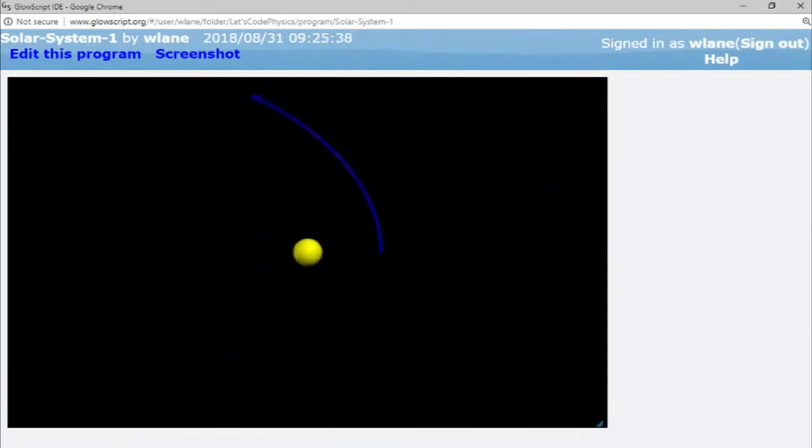Suppose we decrease the star's mass by half. The planet takes a very different trajectory and is able to get farther away from the star before turning back. Why is this? Because with less mass in the star, there's less force between the two objects.